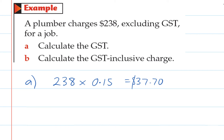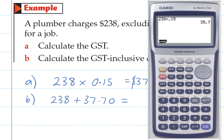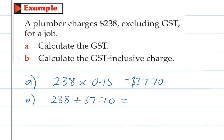So question B, calculate the GST inclusive charge. Well there's two ways to do that. One way is just to go the original charge and add on the GST amount. And so that would be, we'll just go 238 plus 37.70. So $273.70. So that's one way to do it.